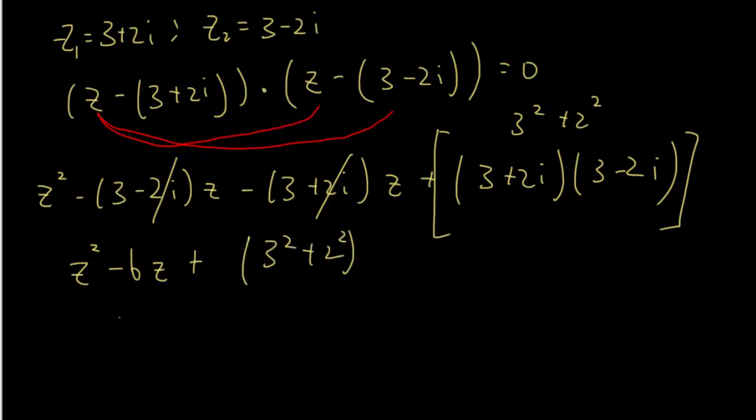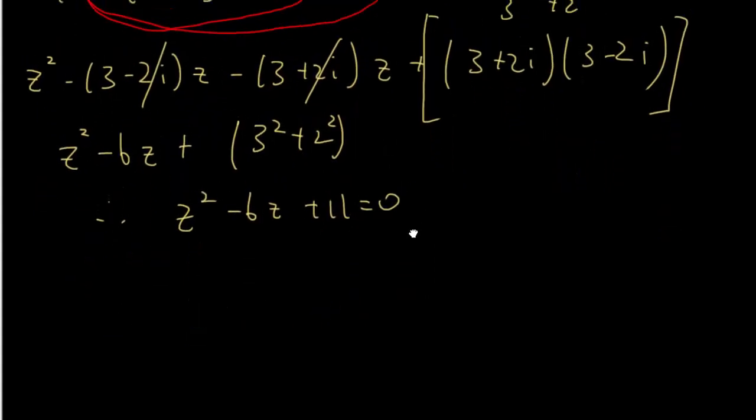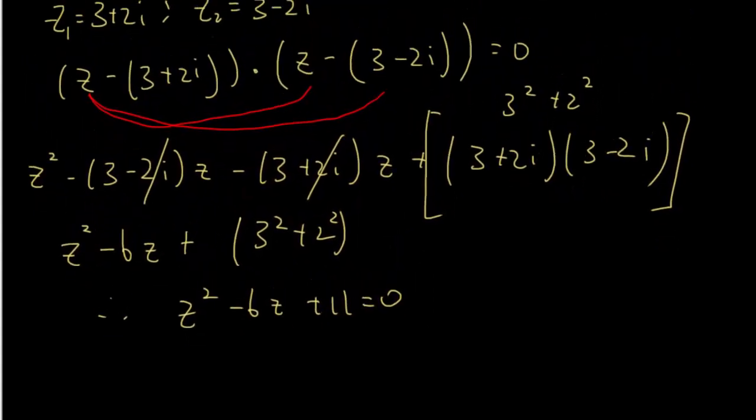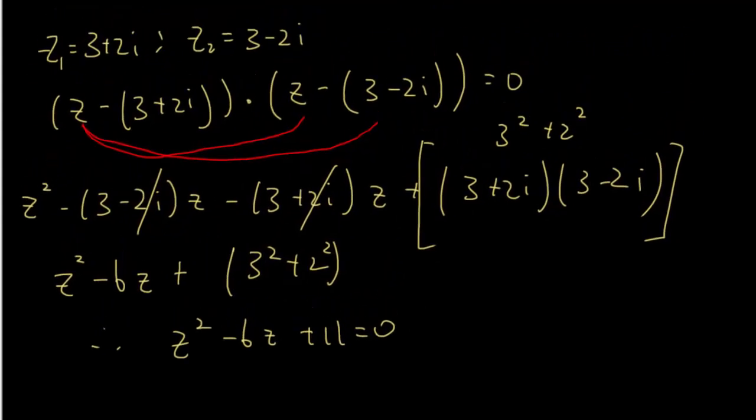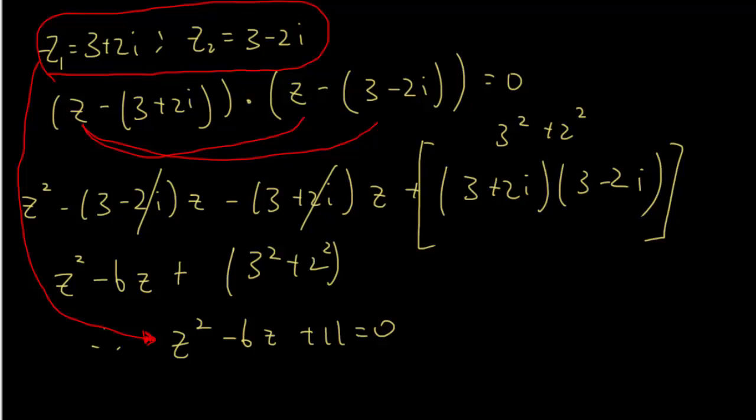So that will be, therefore, z square minus 6z plus 11 gives me 0. So this step is very important. The way that you get back your original formula from your roots to your original formula is very important when you're trying to solve for roots.